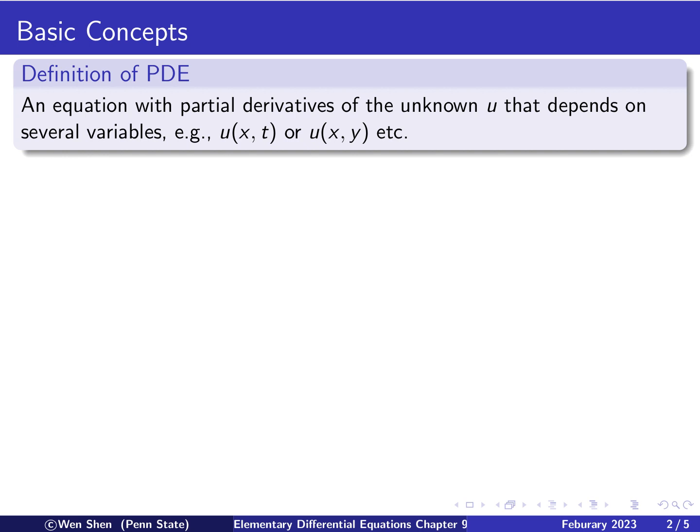Roughly speaking, an equation with partial derivatives of the unknown, let's call it u, that depends on several variables. So u could be a function depending on space, one dimensional, so x and the time t. Or it could be a function only depending on the space, which is two dimensional, x and y.